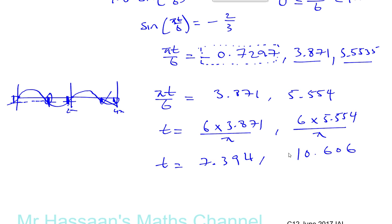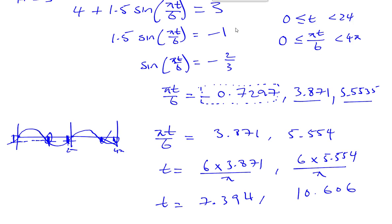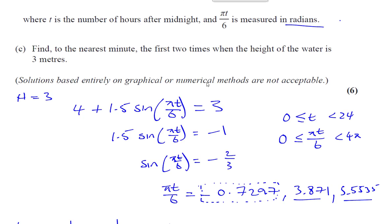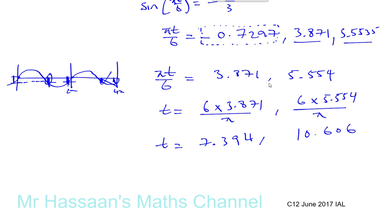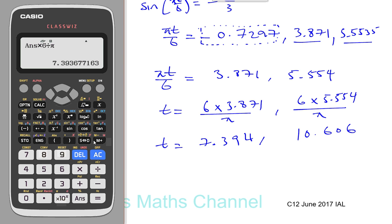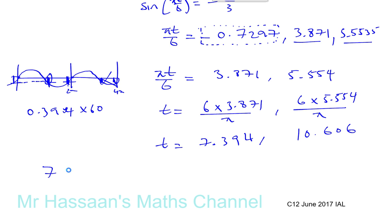Those are the two times, but we've got to give them to the nearest minute. It says t is the number of hours after midnight. So the times are 7 and 0.394 times 60 will tell you that answer in minutes. Take away 7 and times 60, which is 23.6, which is 24. So that's 7:24.